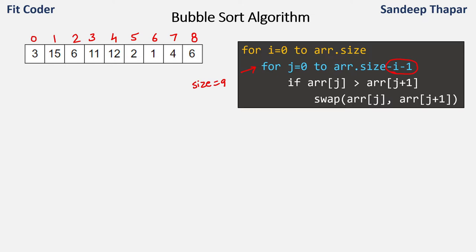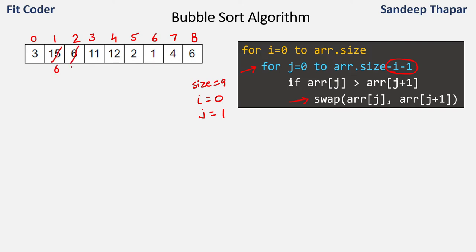Let's do a dry run. For the first case i equals 0 and j equals 0. We compare array[0] with array[1], so we're comparing 3 and 15. Array[0] is not greater than array[1], so we do nothing. Then j is incremented to 1. We compare array[1] and array[2] — if array[1] is greater than array[2] then we swap. These two will be swapped: 6 will come here and 15 will come here. In the next iteration j becomes 2. We compare array[2] with array[3] — comparing 15 with 11. Since 11 is smaller we swap them, so 11 will come instead of 15 and 15 will come instead of 11.